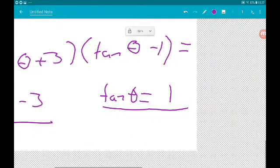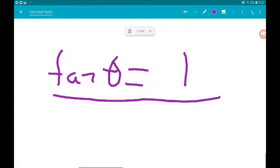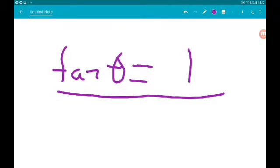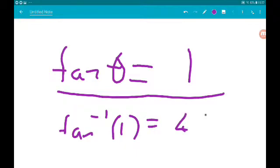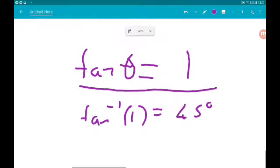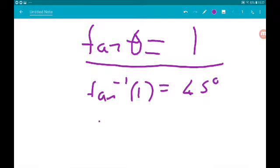Either tan theta equals minus 3 or tan theta equals 1. The one on the right, let's do this one first. Inverse tan of 1 gives us 45 degrees. The period of tan is 180.